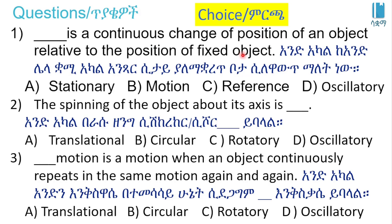To summarize: the motion of an object relative to a fixed object describes the types of motion. The spinning of an object about its axis is rotary motion. The types of motion include translational, circular, rotary, and oscillatory motion.